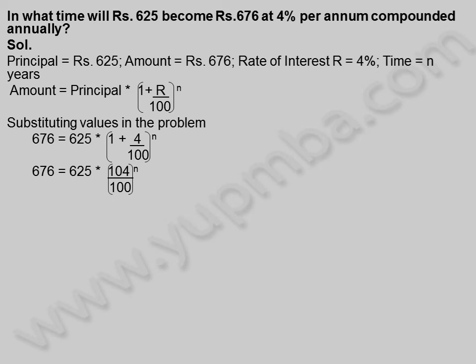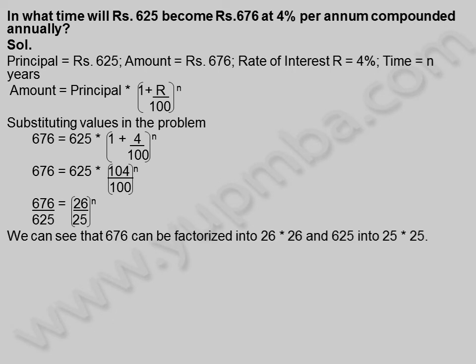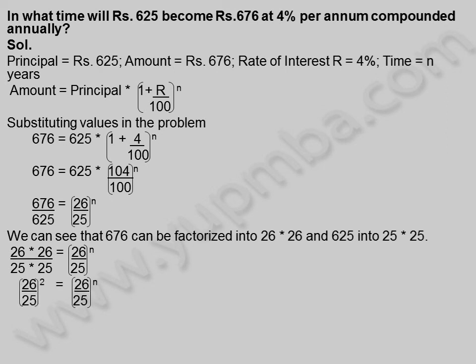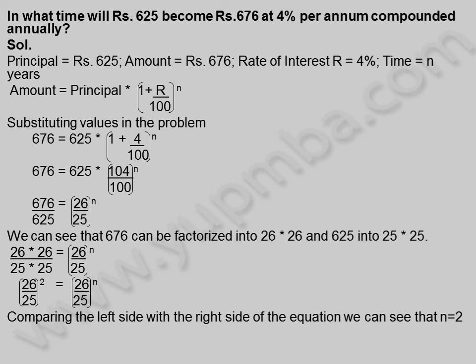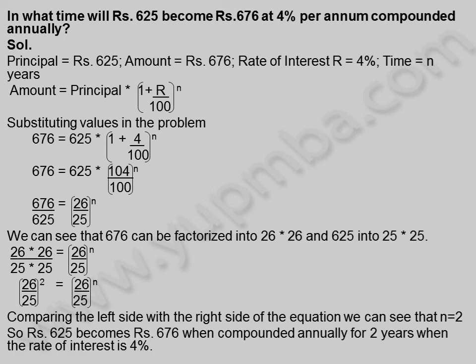676 is equal to 625 into 104 by 100, whole power n. So 676 by 625 is equal to 26 by 25, whole power n. We can see that 676 can be factorized into 26 into 26, and 625 into 25 into 25. So 26 into 26 divided by 25 into 25 is equal to 26 by 25, whole power n. Therefore 26 by 25, whole square equals 26 by 25, whole power n. Comparing both sides, n is equal to 2. So 625 rupees become 676 rupees when compounded annually for 2 years at 4% rate of interest.